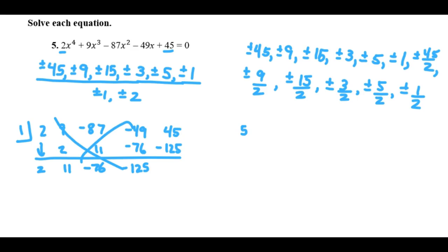But if I try something like 5, we're going to get 2, 9, negative 87, negative 49, and 45. So bring down the 2, and we get 10. That gives me 19. 19 times 5 is 95. Minus 87 is 8. 5 times 8 is 40, which gives me negative 9, which gives me negative 45. And hey, that ends up being 0 for my remainder. So 5 is a good answer to my equation.